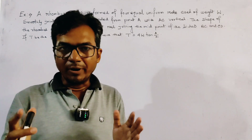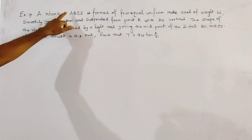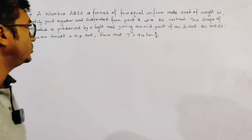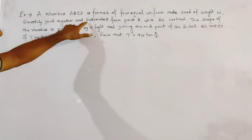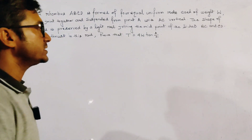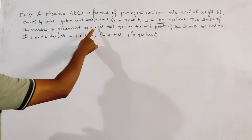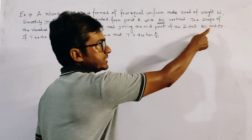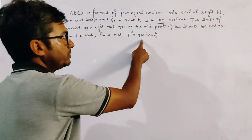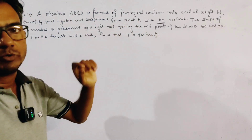This problem is from the principle of virtual work, from the subject statics. A rhombus ABCD is formed of four equal uniform rods, each of weight w, smoothly joined together and suspended from point A with AC vertical. The shape of the rhombus is preserved by a light rod joined at the midpoints of sides BC and CD. If T is the thrust in this rod, prove that T = 4w·tan(A/2), where A is the angle at vertex A of the rhombus.